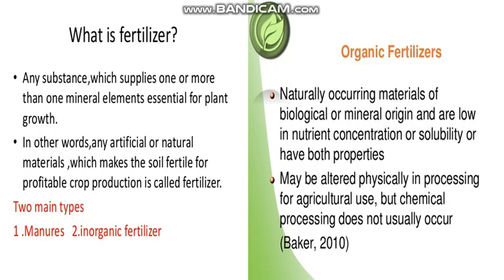When we add fertilizer, the soil will become fertile, which is good for growing more crops and will give us profit. Mainly fertilizers are of two types: number one is manures or organic fertilizers, which are natural fertilizers, and number two is inorganic fertilizers, which are made in factories.